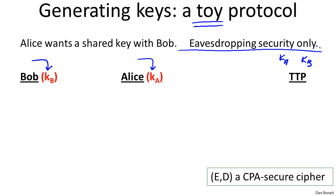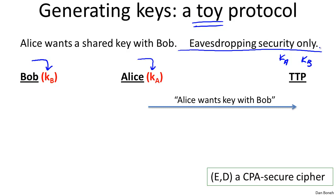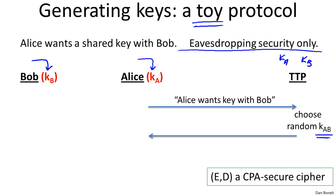An adversary that listens to the conversation won't know what the shared key K_AB is going to be. The protocol works as follows: Alice starts by sending a message to the trusted third party saying she wants a secret key shared with Bob. The trusted third party chooses a random secret key K_AB and sends one message back to Alice. The first part of that message is an encryption using Alice's secret key K_A of the message that this key is to be shared between Alice and Bob, including K_AB.